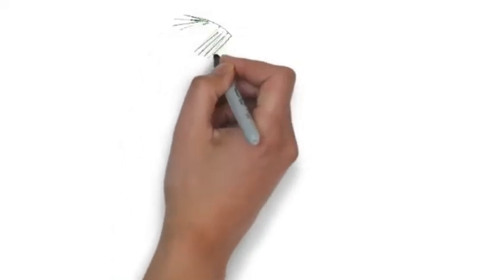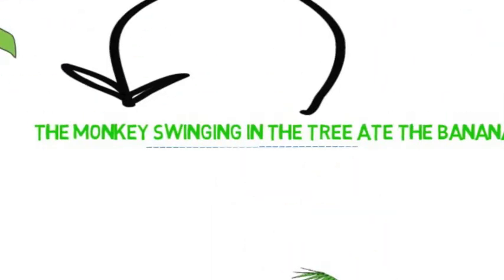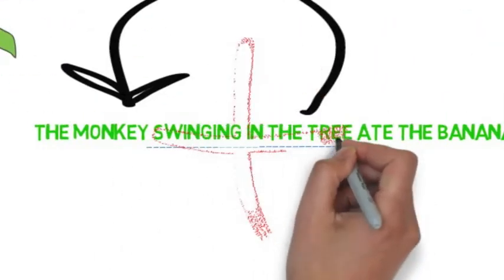And the audience pictures a monkey swinging in the tree eating a banana, exactly what you want them to see. Notice that the sentence still makes sense if the modifier is deleted.